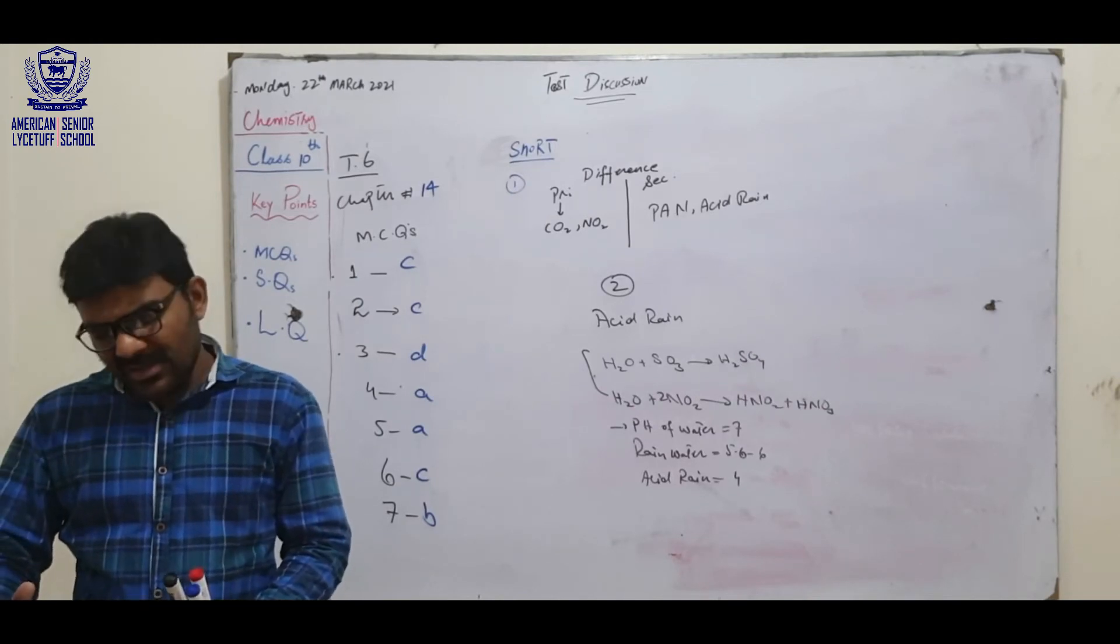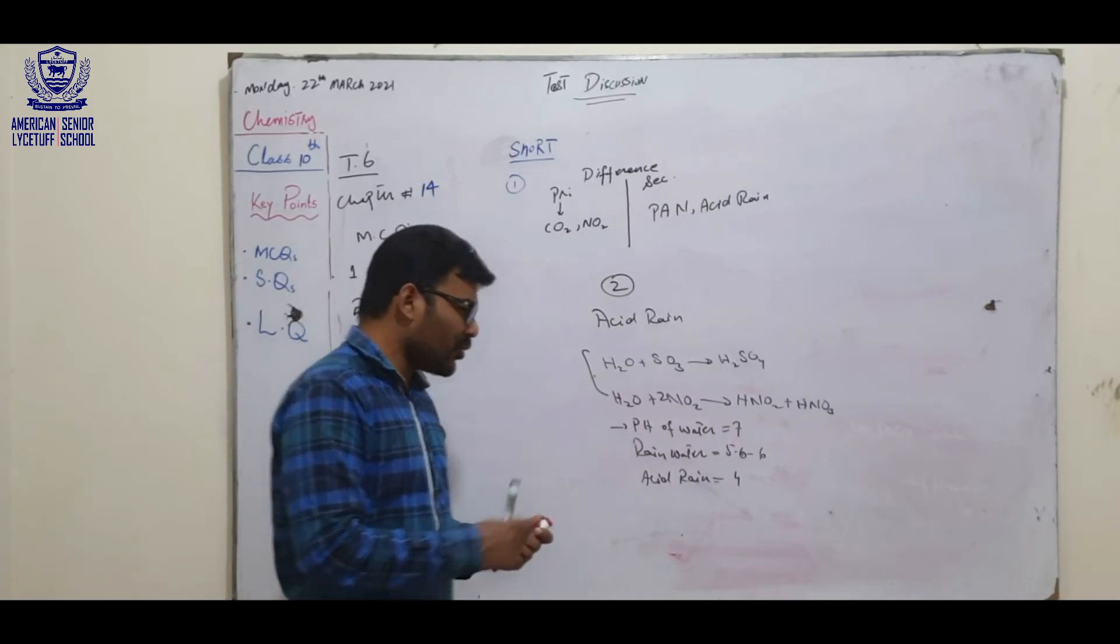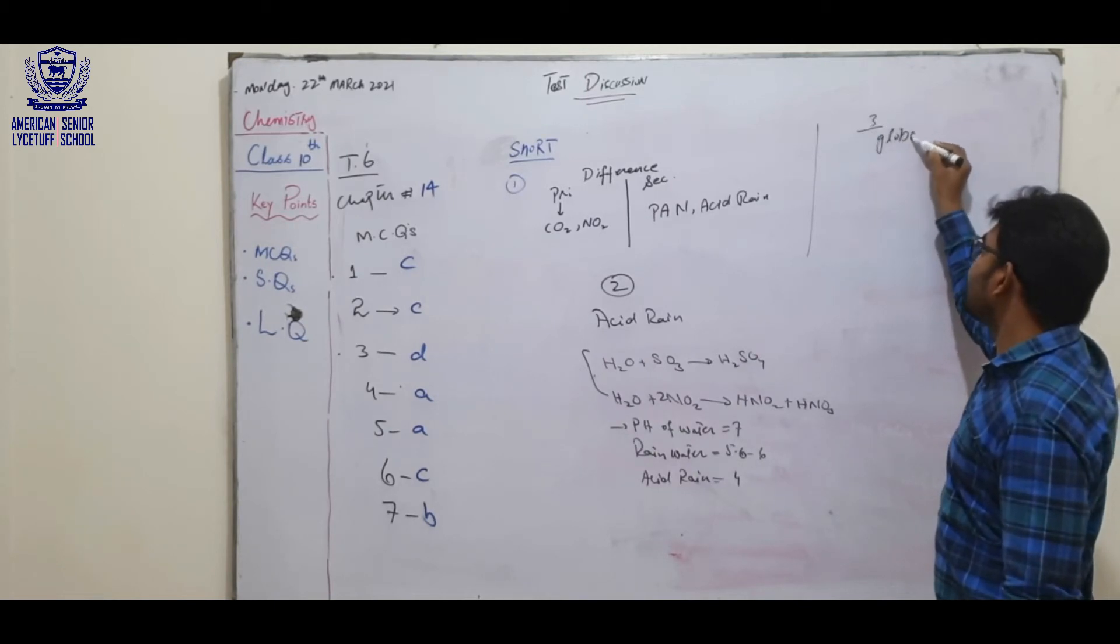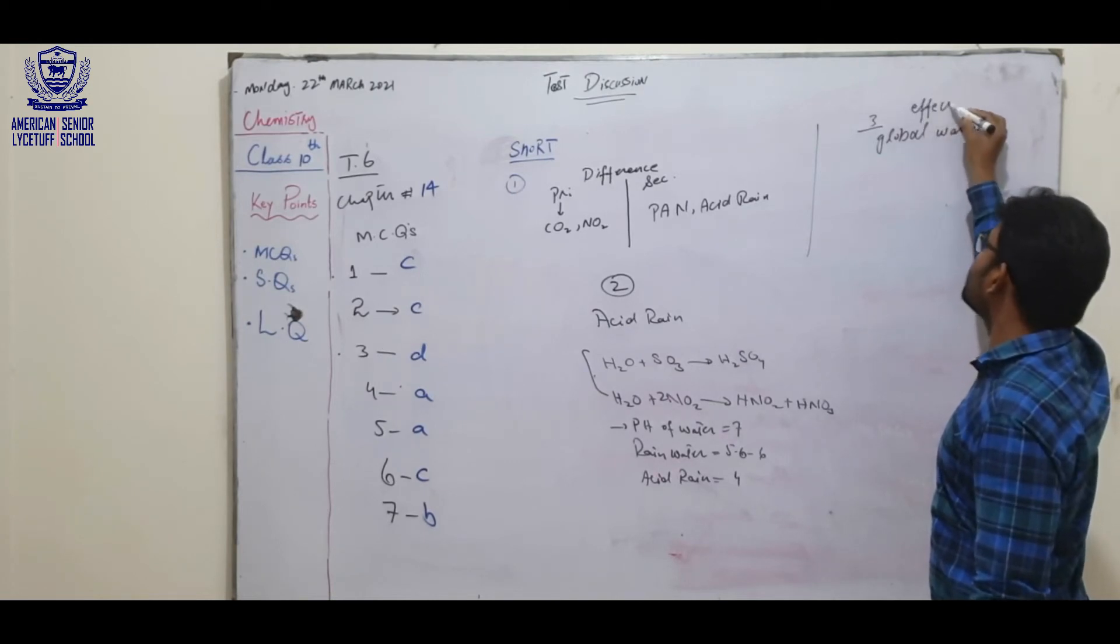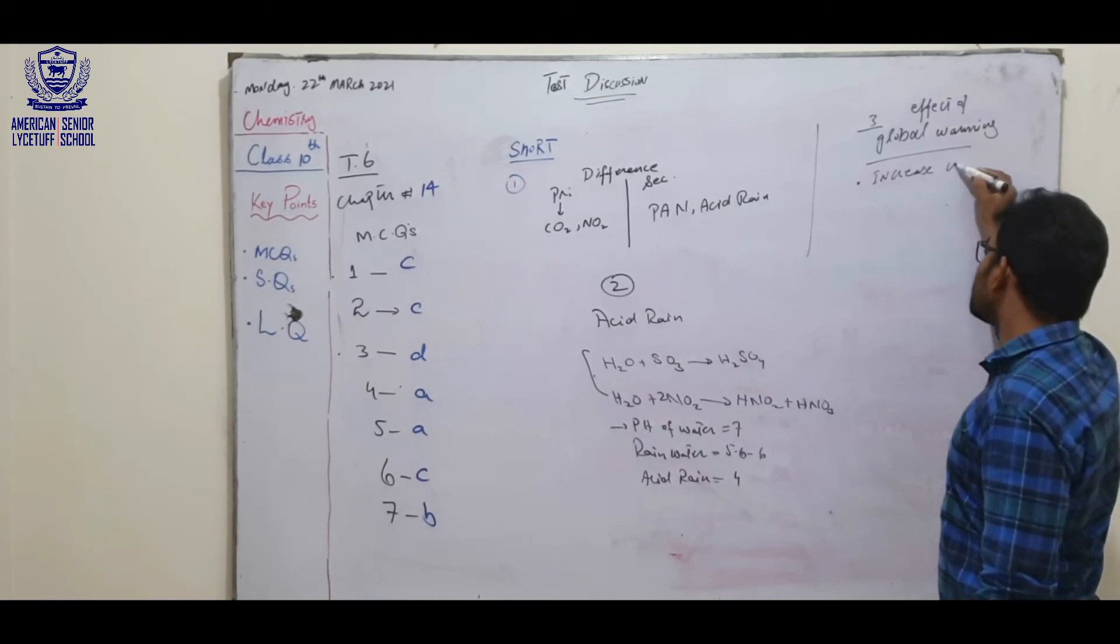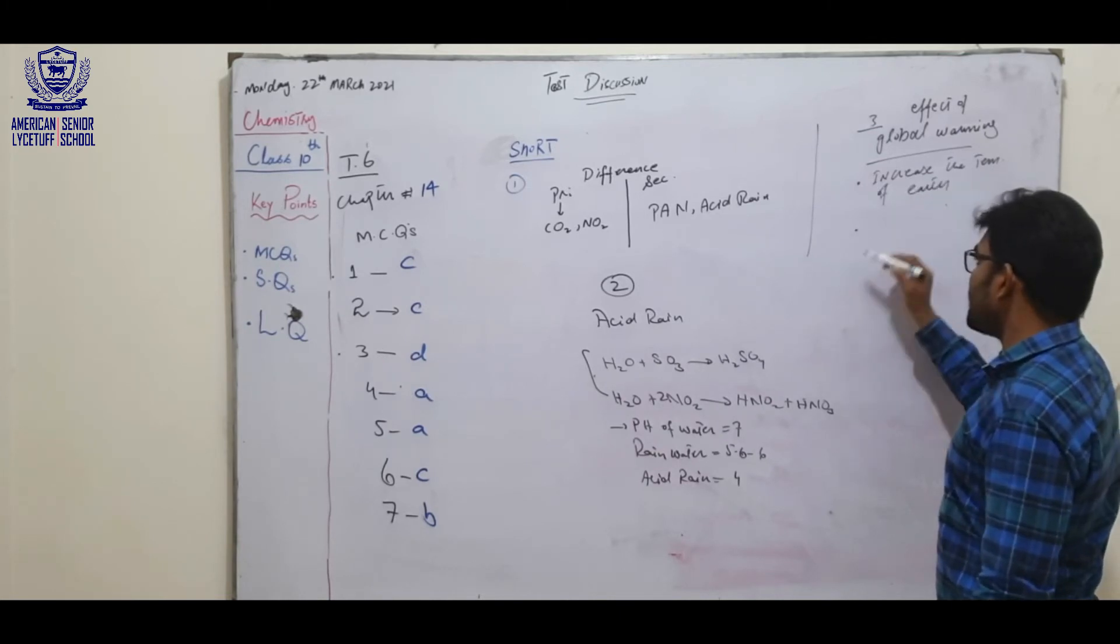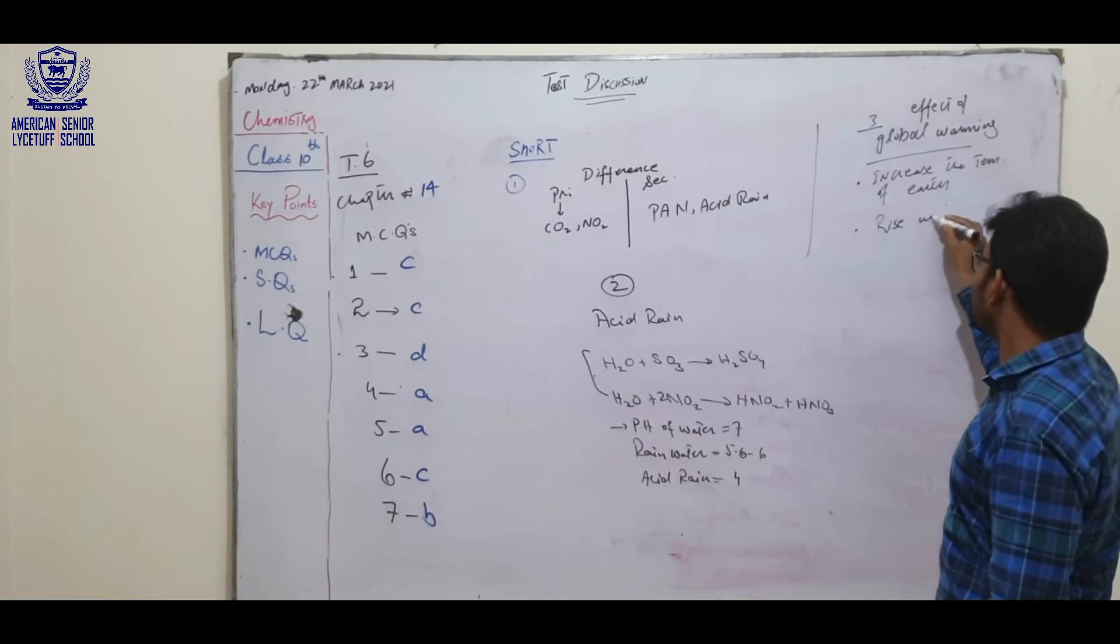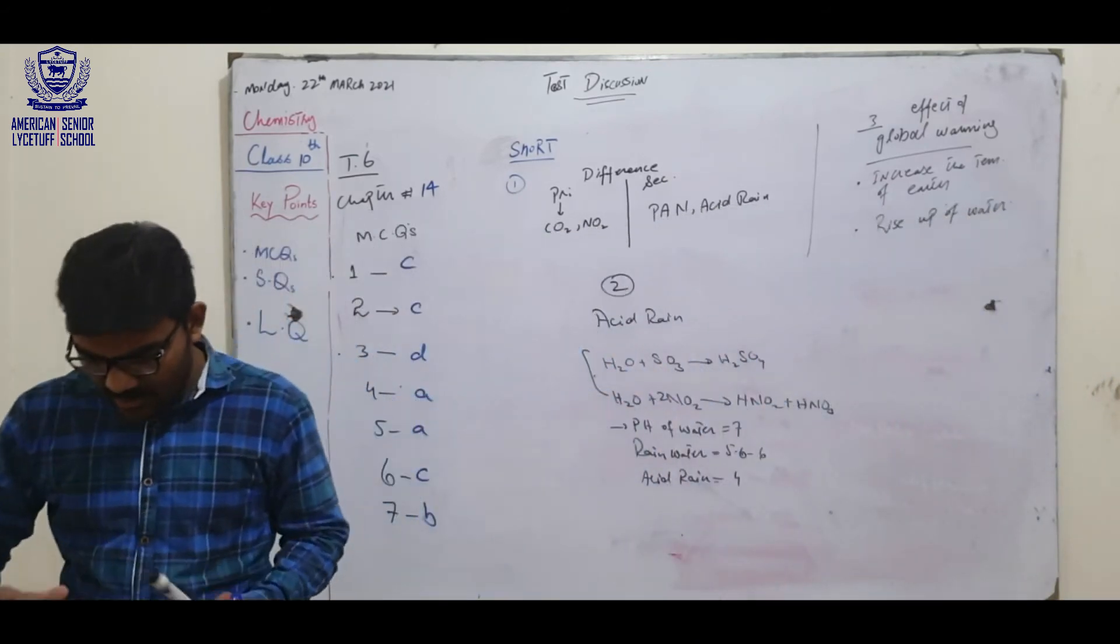Write effects of global warming. This is part of the paragraph, but the topic of global warming has been discussed. The effect of global warming: you have to write increase in temperature of the Earth, and the second is rising of the water level. Water level is increased. The third is change in weather pattern. Next.